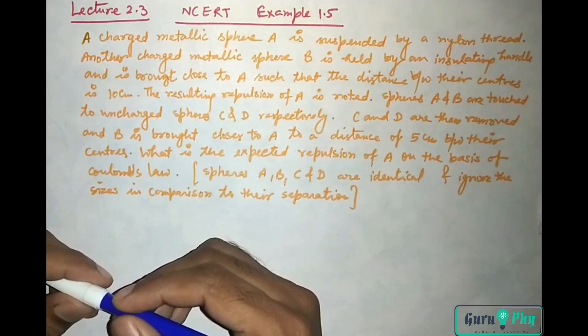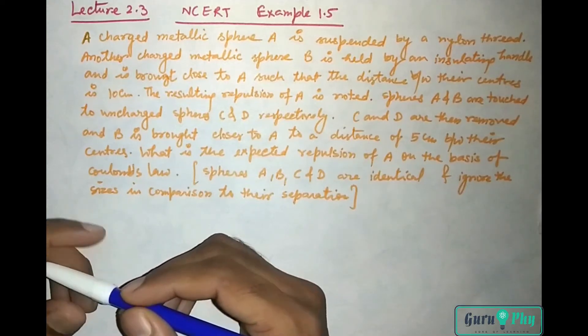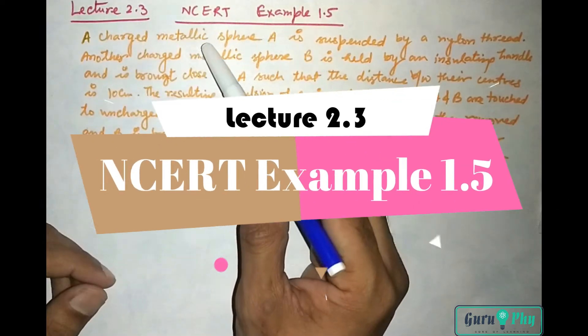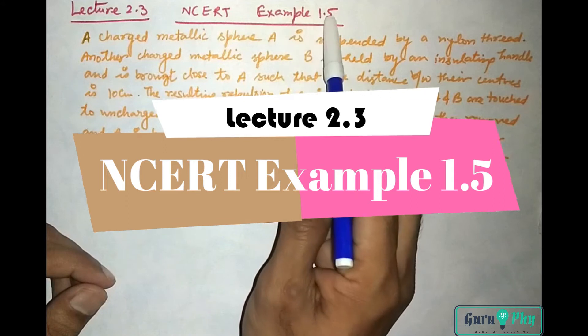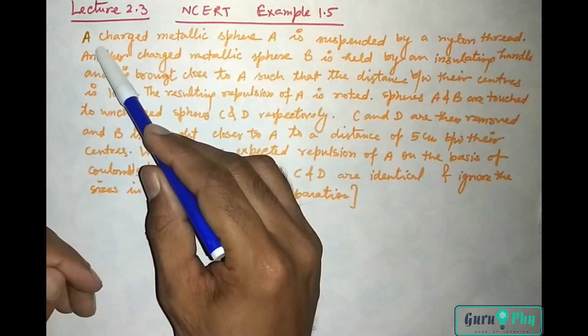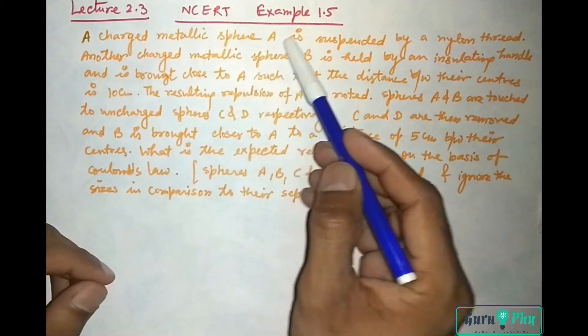Hello students, welcome to Guru Phi, the core of learning. In this lecture, lecture 2.3, we will discuss an example from NCERT, example number 1.5. It is based on Coulomb's law. A charged metallic sphere A is suspended by a nylon thread.